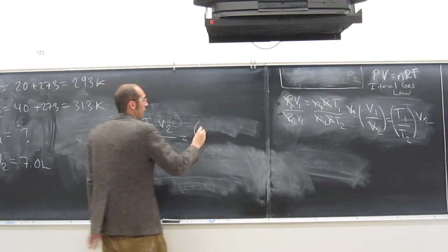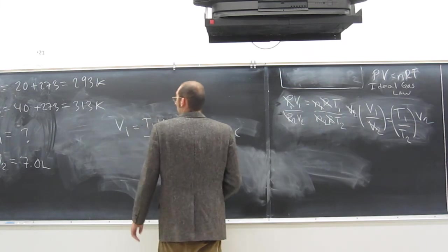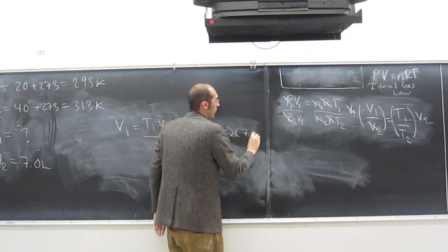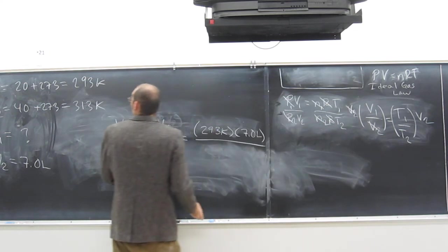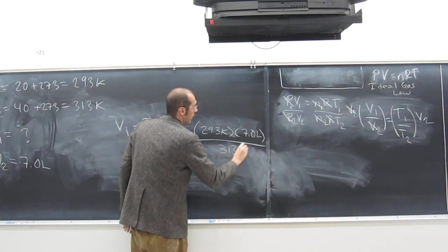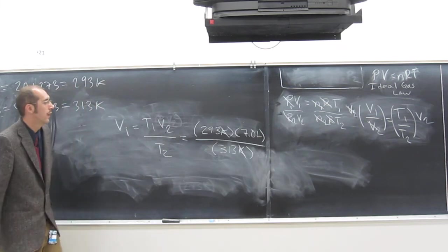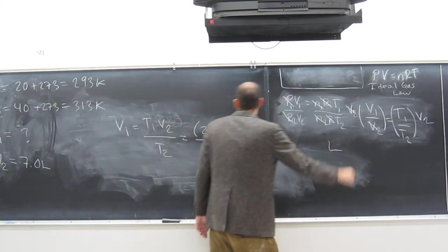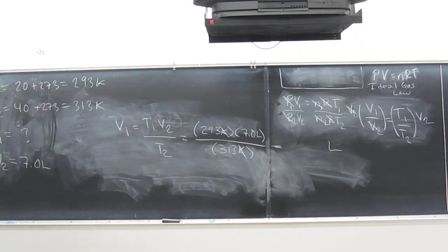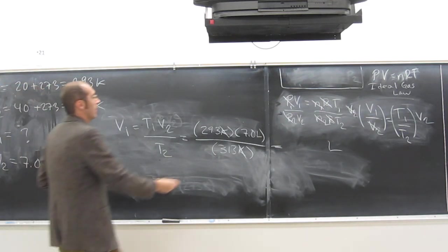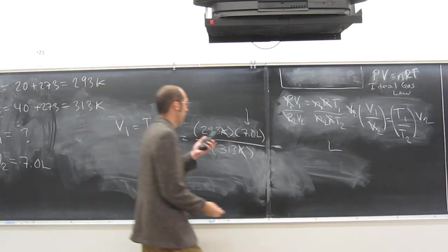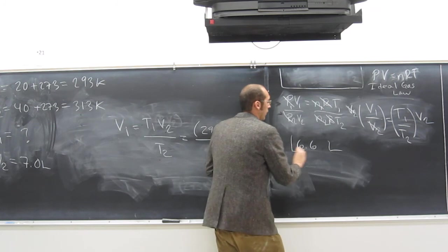So, T1 is 293 Kelvin. V2, 7.0 liters. T2, 313 Kelvin. You guys got those on your own, right? Cancel out your K's. Cancel out your Kelvins. And what do we get? Liters? We're cool. 6.5. Okay. Well, let me figure it out, too, because I haven't done this one before. 293 times 7 divided by 313. And so, since you're going to do it to two sig figs there, it's going to be actually 6.6 liters, right?